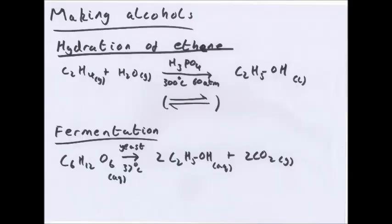Making alcohols two ways. Hydration of ethene: ethene plus steam becomes ethanol under conditions of a phosphoric acid catalyst, 300 degrees Celsius and 68 atmospheres. Now this is a reversible reaction, so there is 100% atom economy, which is good, but you do not get 100% product.